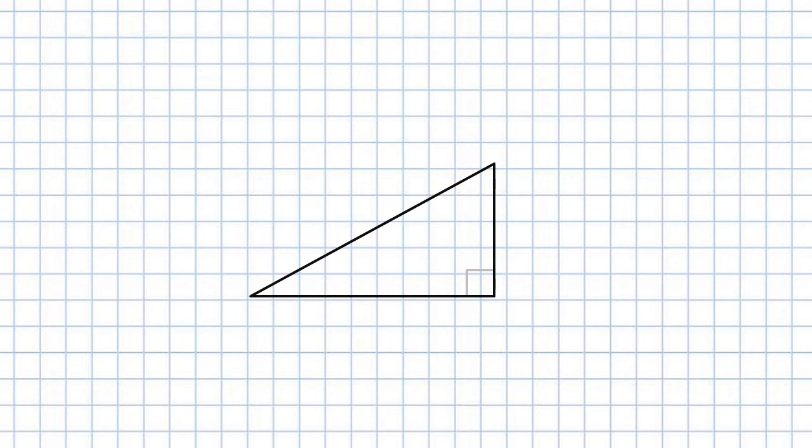Starting with a classic right triangle, we have one side, the hypotenuse, that's directly opposite the 90 degree angle.